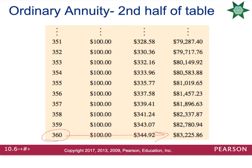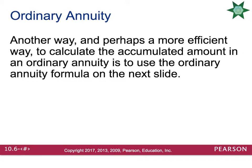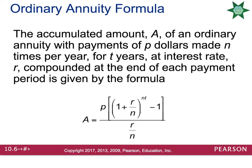This can be a little time-consuming, so we typically like to do this a different way. A more efficient way to calculate the accumulated amount in an ordinary annuity is to use the ordinary annuity formula, which is on the next slide. The formula is A equals P times the quantity 1 plus R over N raised to the Nt minus 1, all divided by R over N.